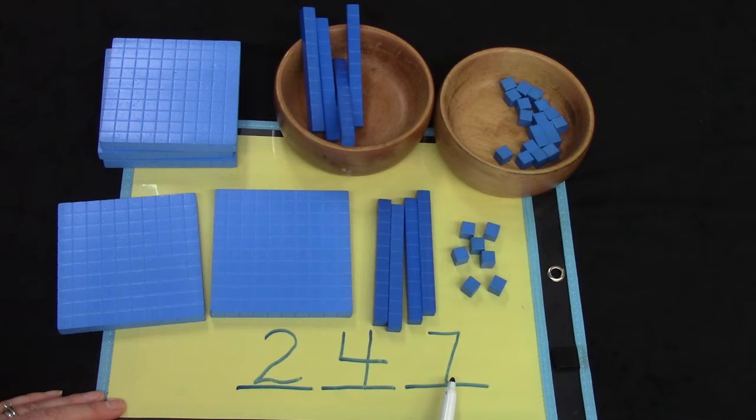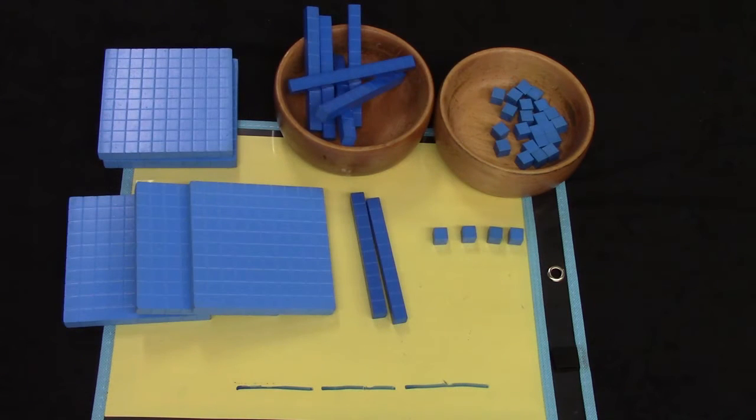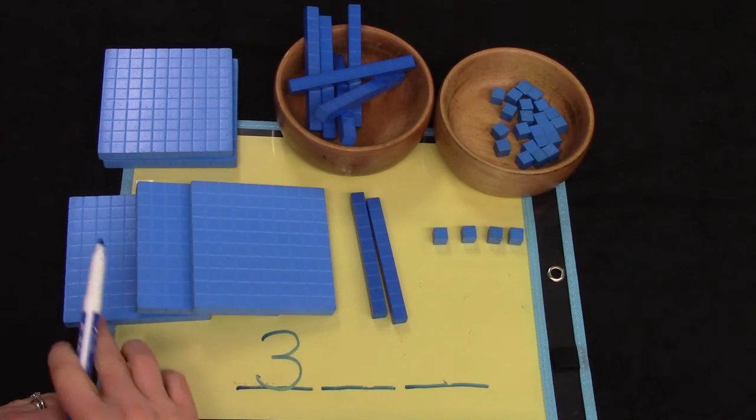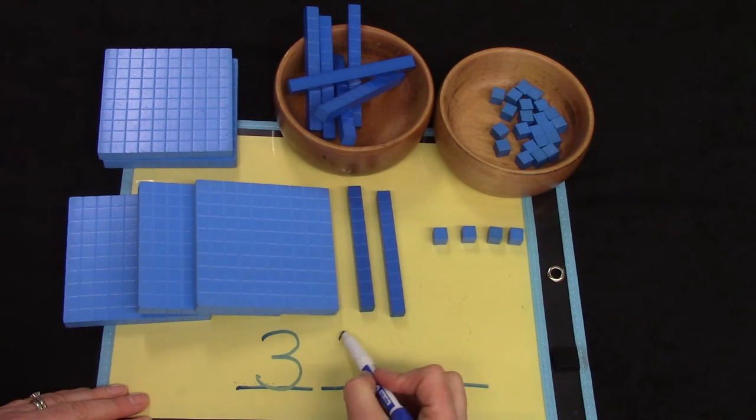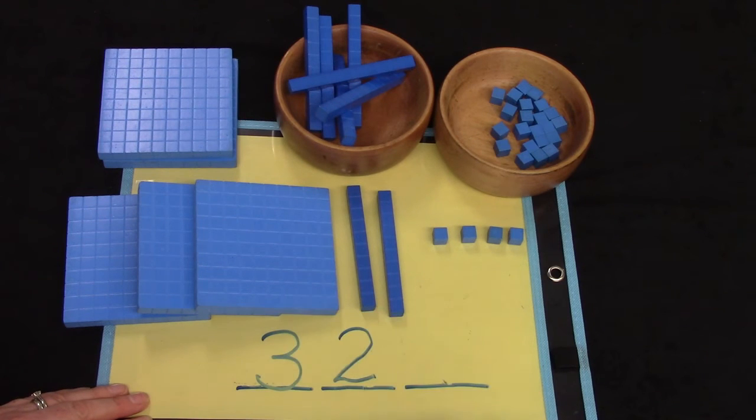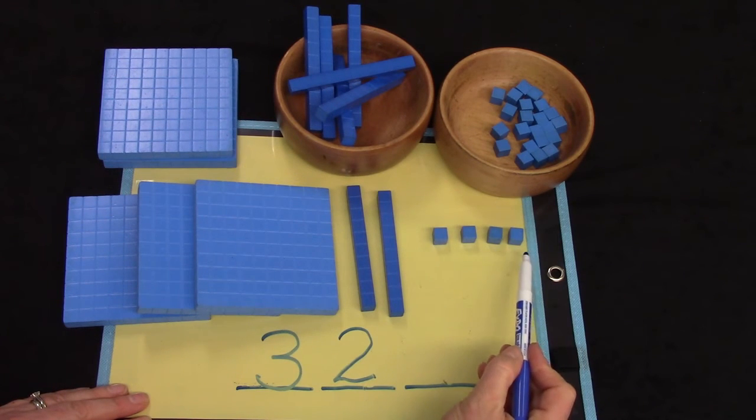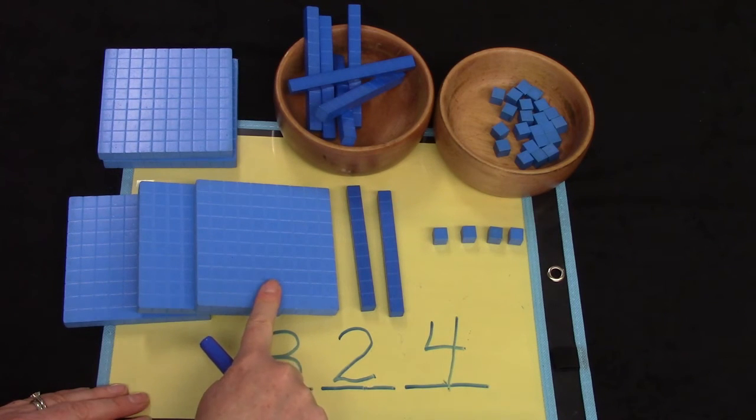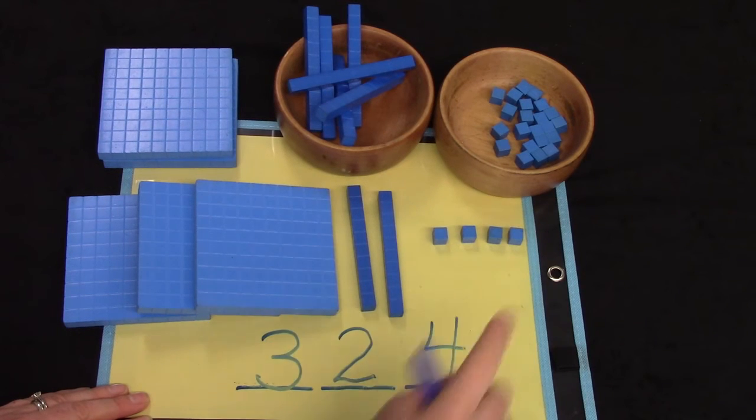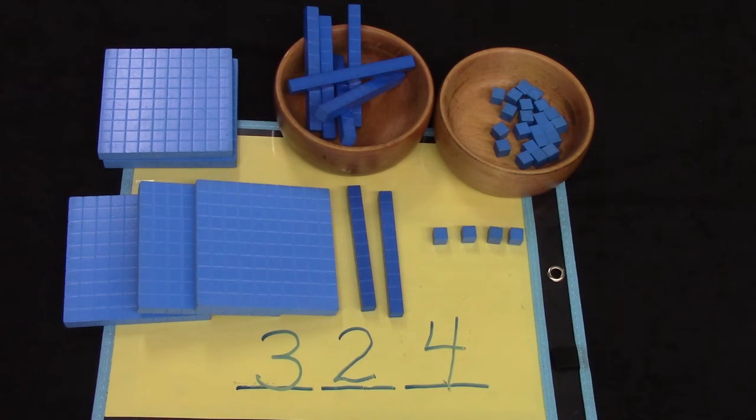Let's try another one. Can you see what number our blocks represent? Let's start with our hundreds place. How many groups of 100 do we have? We have three groups. One hundred, two hundred, three hundred. How many groups of ten do we have? Two, ten, twenty. And how many single ones? Four. We have three hundred and twenty-four. Well done!